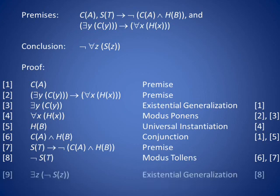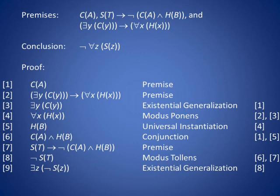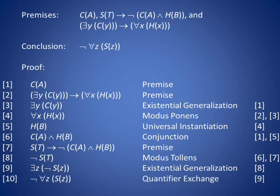Modus ponens applied to lines 6 and 7 results in not s of t on line 8. An existential generalization of line 8 produces line 9: there exists a z such that not s of z. Finally, a quantifier exchange applied to line 9 results in line 10: the negation of for all z, s of z. That is the conclusion we sought and the proof is complete.